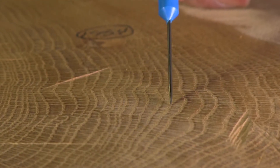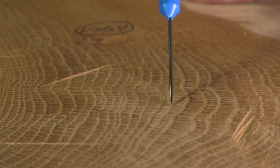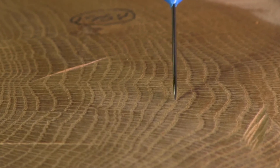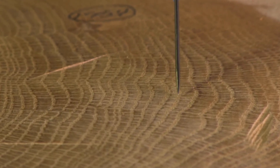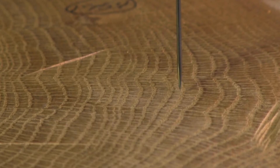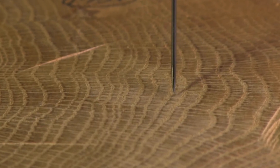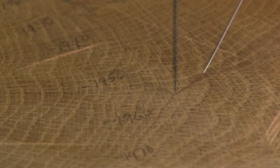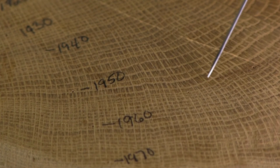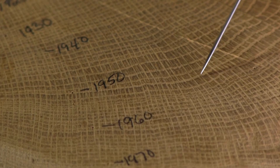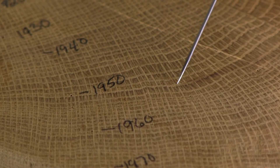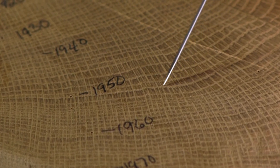You can also see that tree ring widths vary because temperature and precipitation vary within the year. During summertime the tree grew faster, so the color is light, but in the fall when it grew slowly, the color is dark.